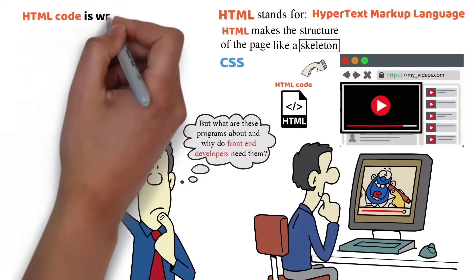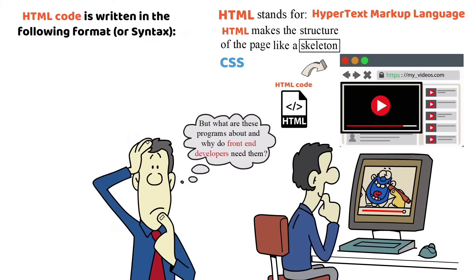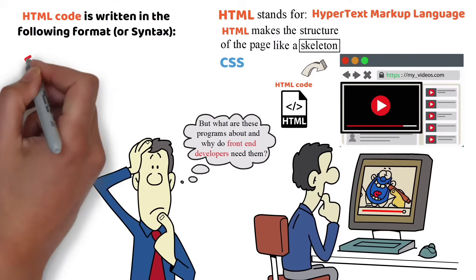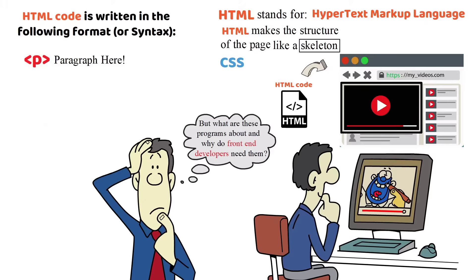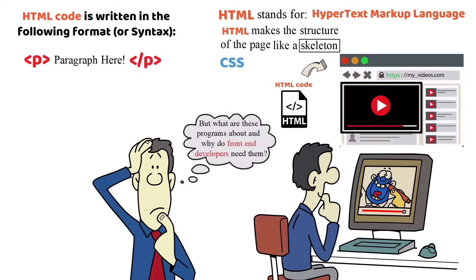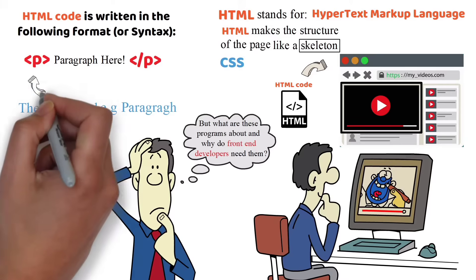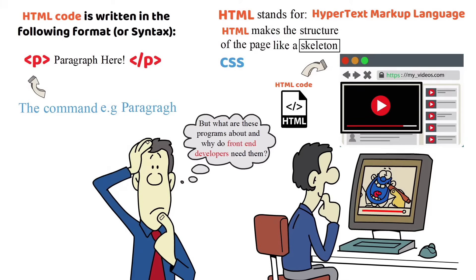HTML code is written in the following format or syntax. The command — for example, paragraph — is put into these brackets and ends with the same format, but with a forward slash, with text for your paragraph in between.